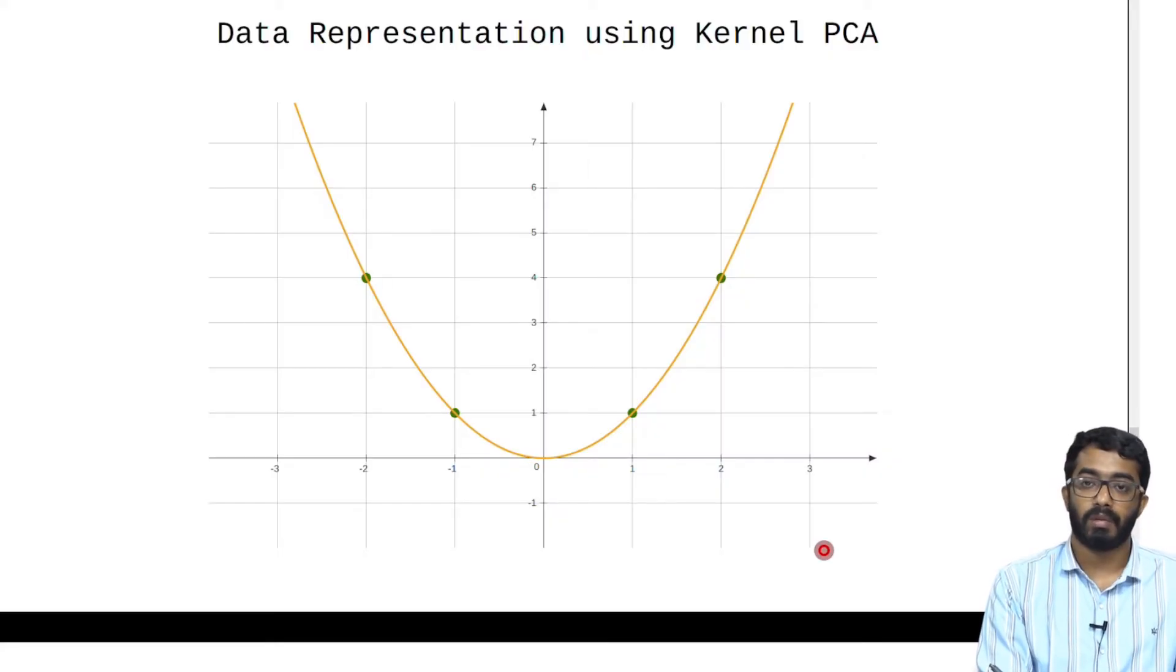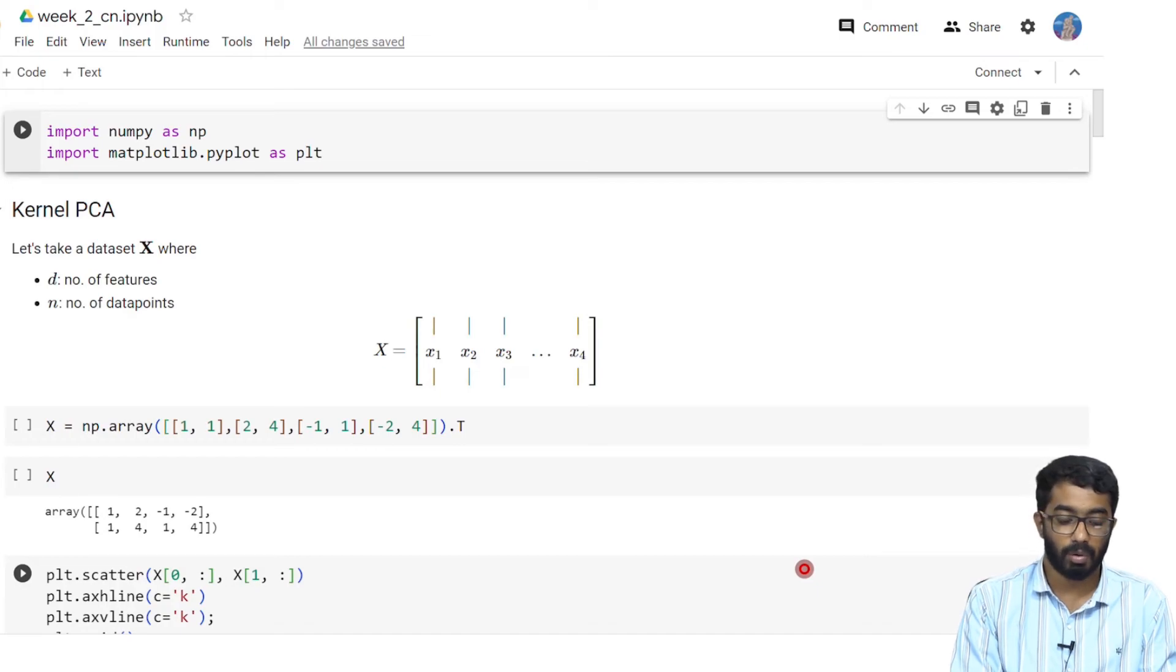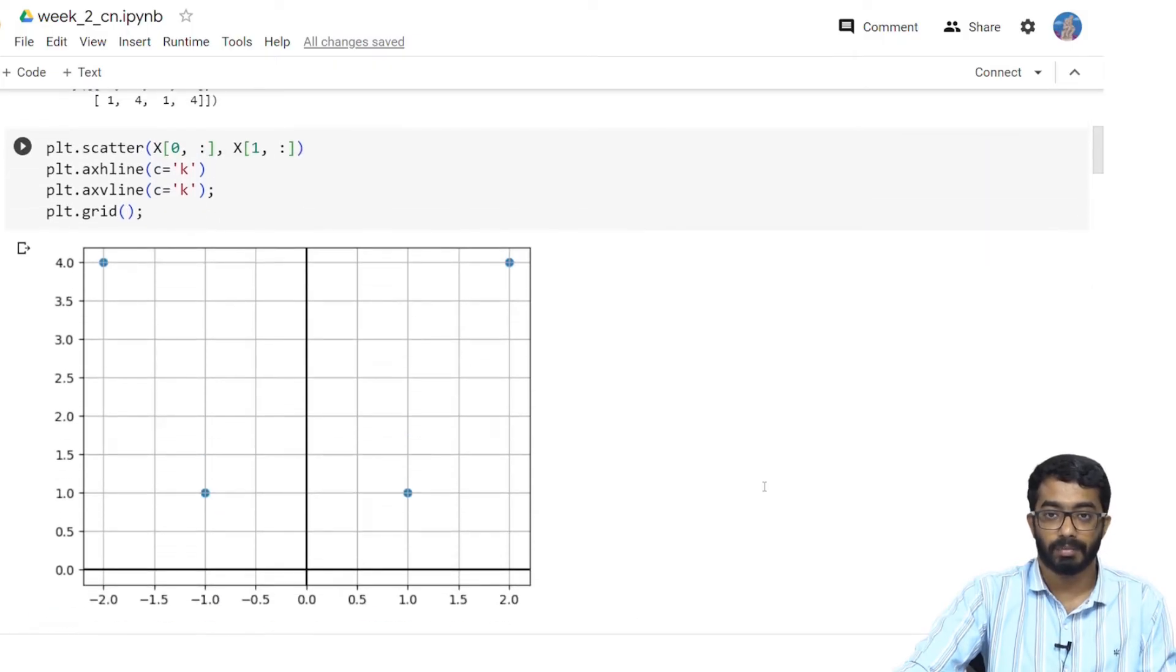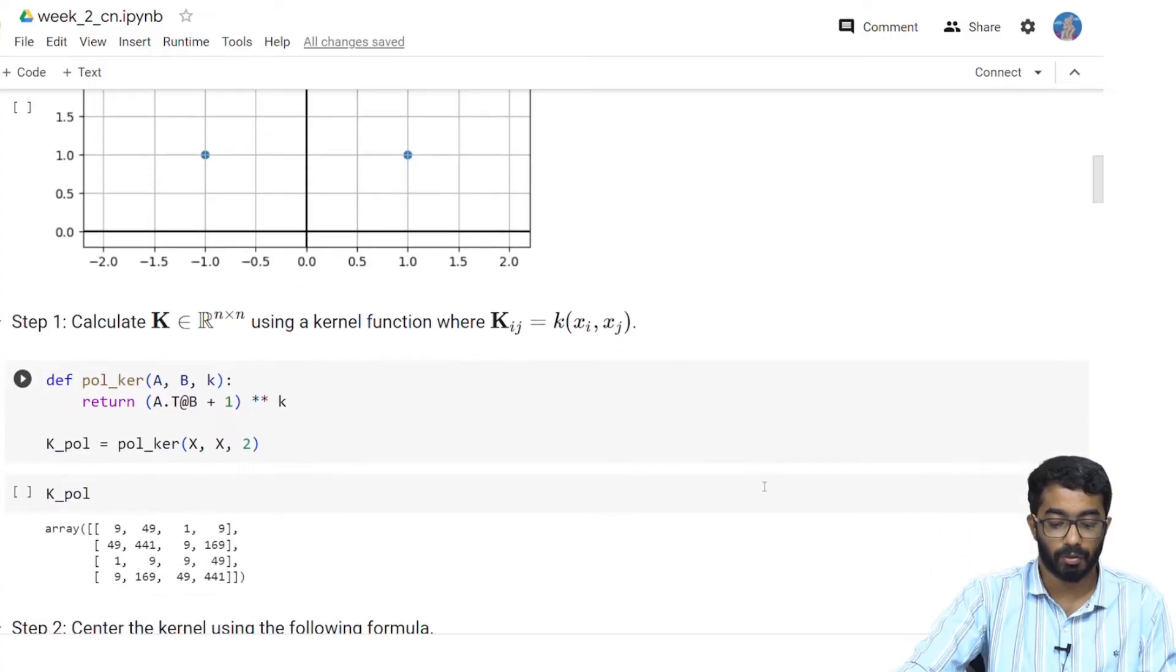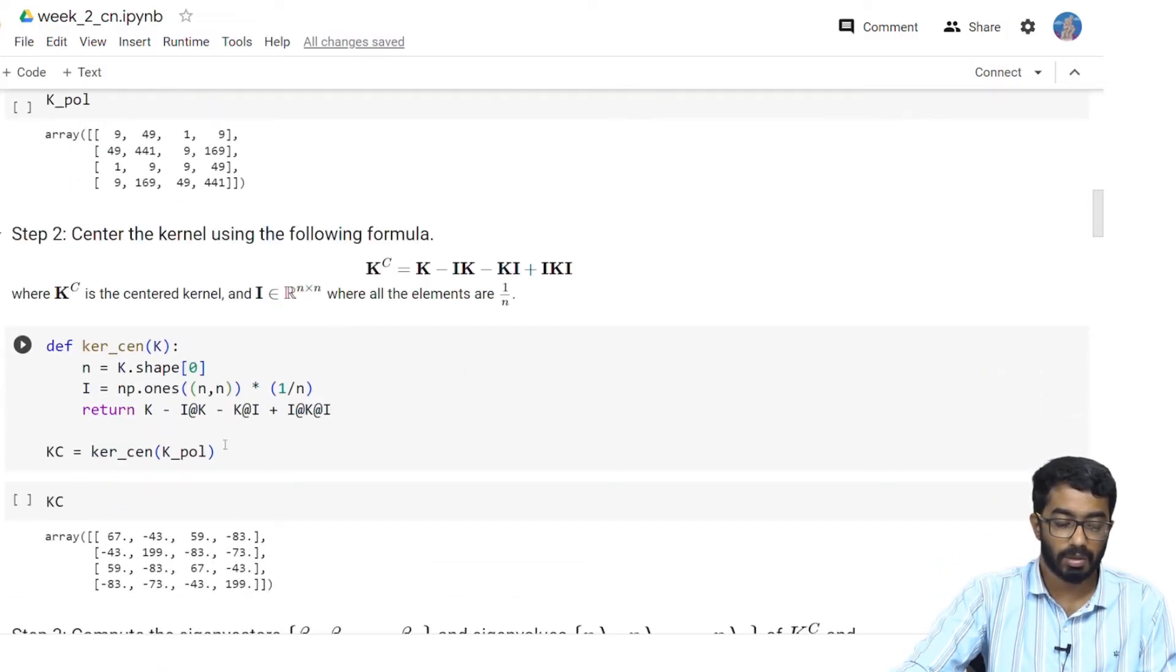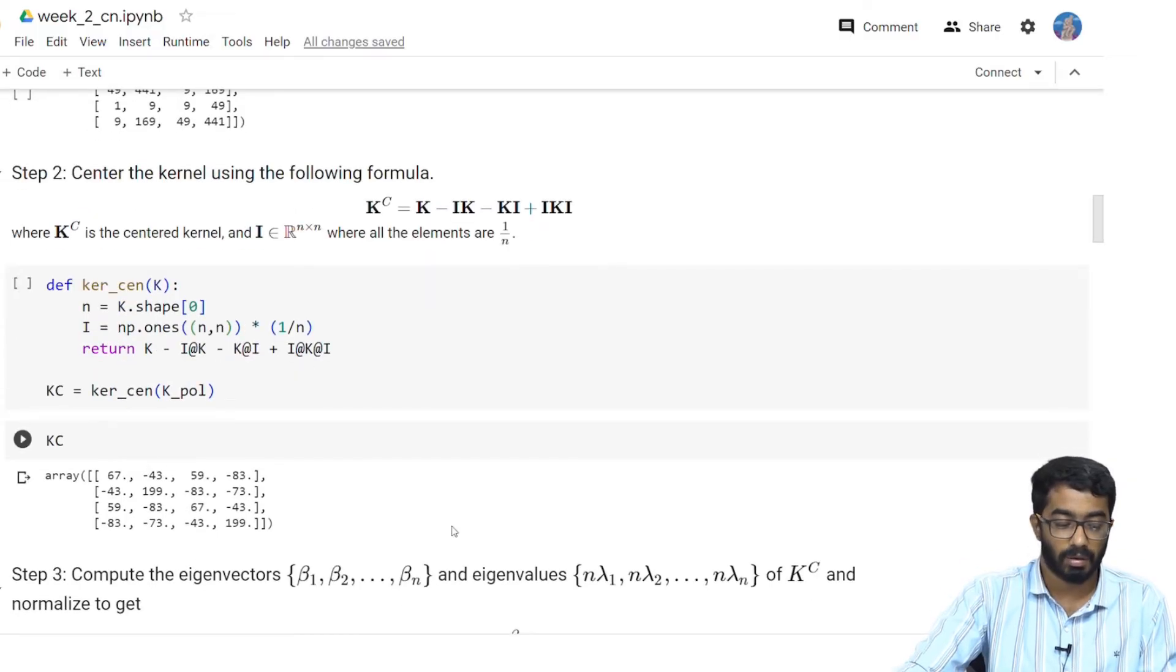Now let us try to do whatever we did in this companion notebook in Google Colab. So first we load our data set here then we plot our data set using the matplotlib library and as you can see it is the same data set as before. We calculate the polynomial kernel using the polynomial kernel function here and then we center our data set using the centering function. K_c is given by this matrix.